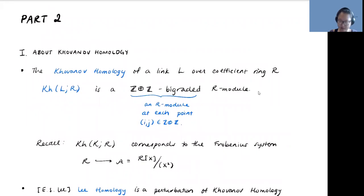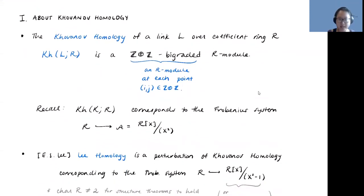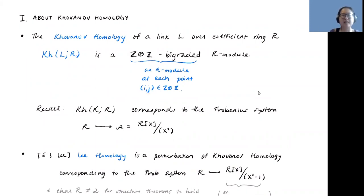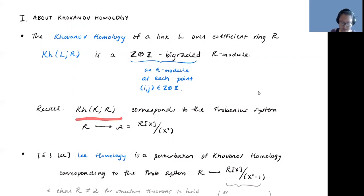Let me start with a reminder of Khovanov homology. In the first part I talked about it as a TQFT, but right now I just want to focus on the fact that it is a bi-graded module. If I work with a coefficient ring R, Khovanov homology has a homological and a quantum grading—each are integers. For each pair of integers in Z×Z, there is some R-module, and if I'm working over a field, it's just a vector space of some dimension.